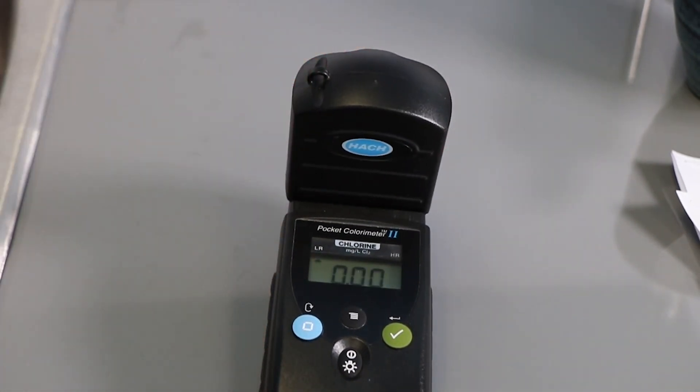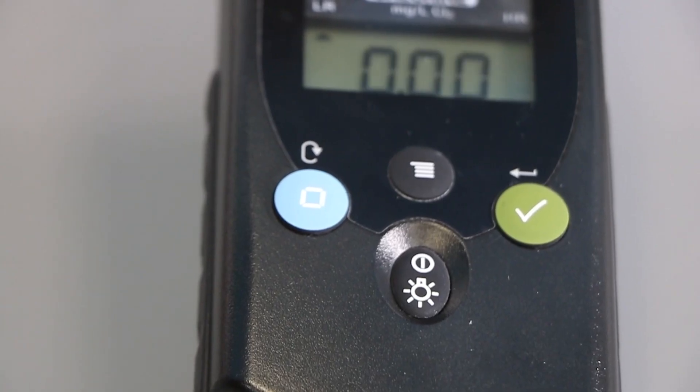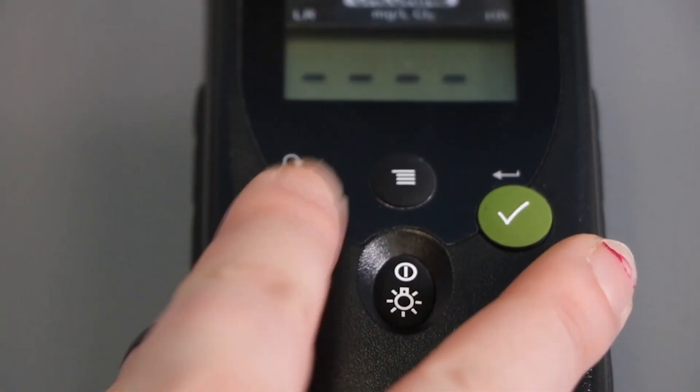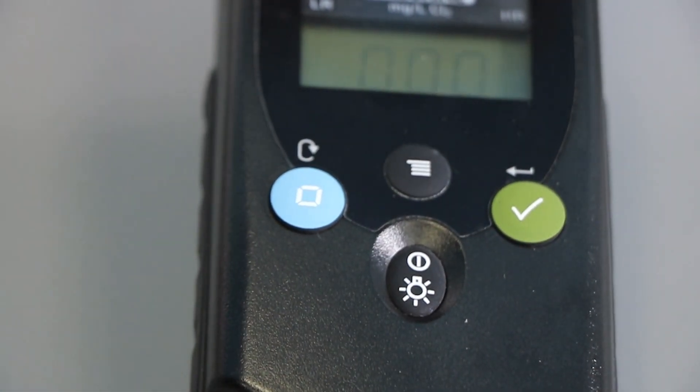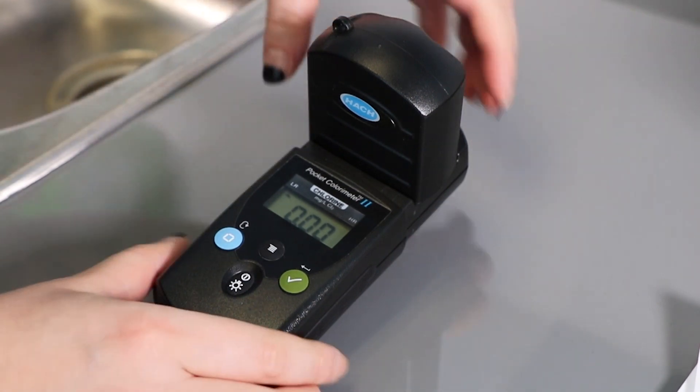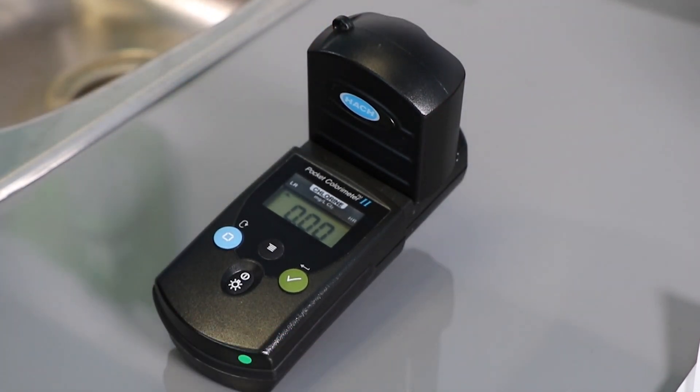Press the zero button. The counter should read 0.00. Chlorometers are zeroed or blanked to account for any background color in the sample that may impact the chlorine residual reading. For an accurate chlorine residual reading, don't forget this step.